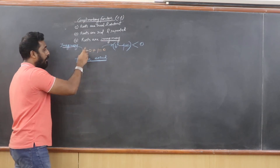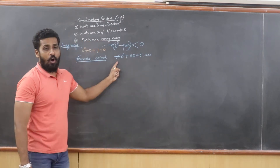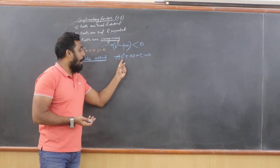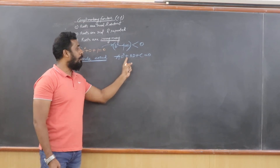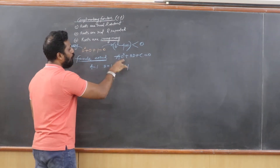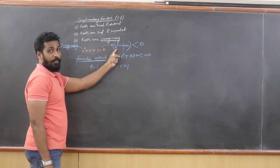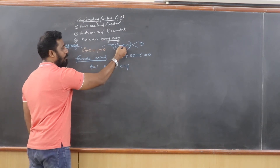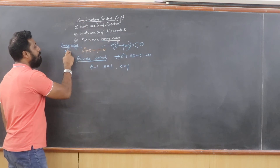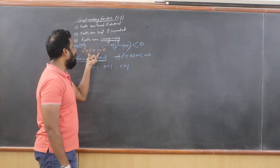Comparing d² + d + 1 = 0 with the standard form ad² + bd + c = 0, we get a = 1, b = 1, and c = 1. Computing b² - 4ac gives 1 - 4(1)(1) = 1 - 4 = -3, which is less than zero. Since b² - 4ac is negative, we can be sure this equation will have imaginary roots, so we use the formula method.